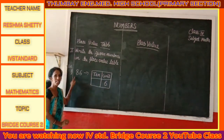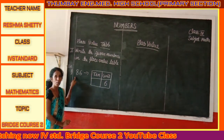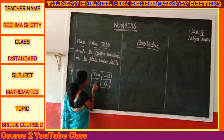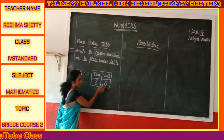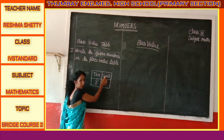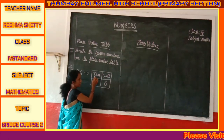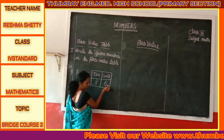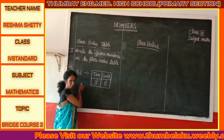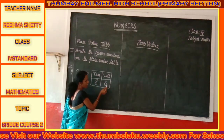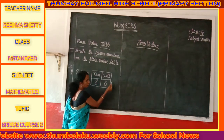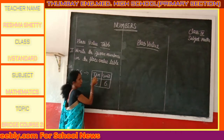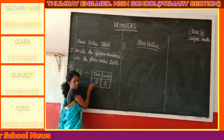How many tens are there? We have 8 tens, so 8 is written in the tens place. 6 represents unit place and 8 represents tens place. Always mark the places from right to left. We will start from the units place, then we come to the tens place.